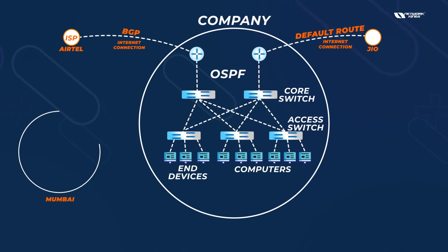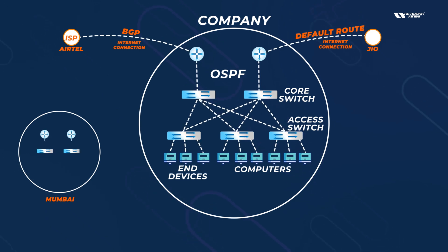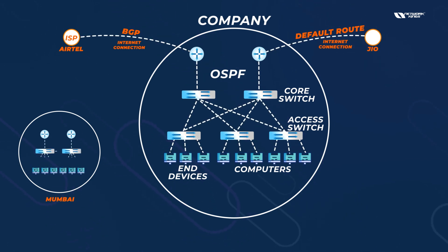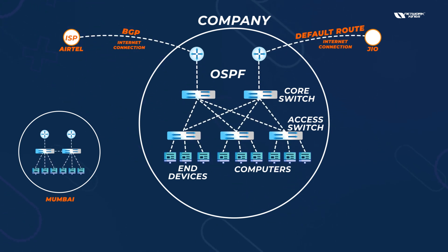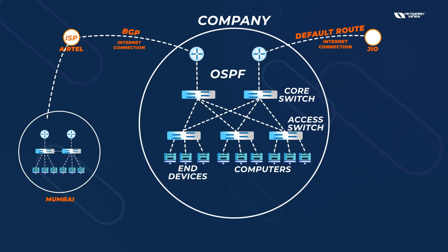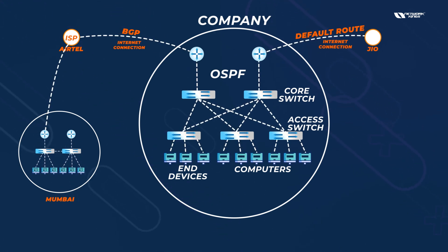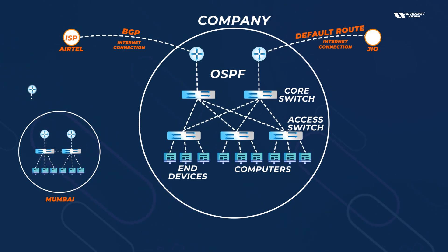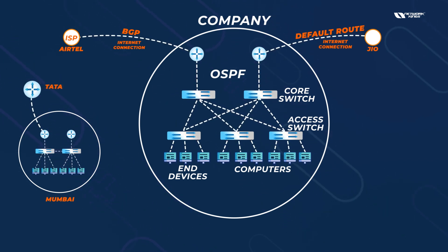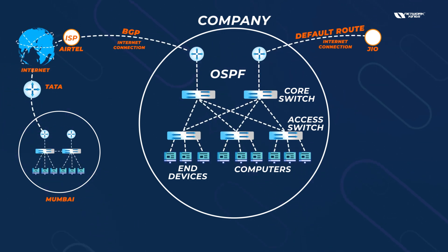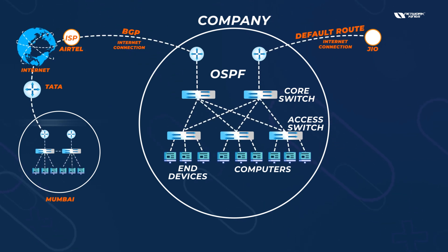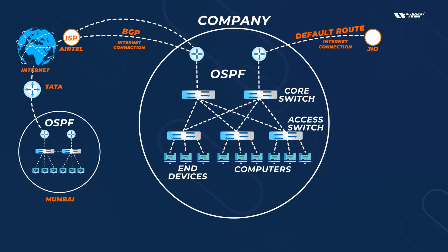You may have a branch in Mumbai with the same model — two routers, two switches, and some computers. The switches are connected with the two routers. You have a private connection or connection over the internet, because this branch has also taken internet from Airtel, or maybe from any ISP — it's not mandatory to take from Airtel. Suppose we have taken that connection from Tata, and on the backend, Tata and Airtel are both part of the internet.